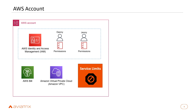Every account has service limits — basically quotas on the number of things you can do with a service, such as the number of EC2 instances in a VPC, the number of VPCs per region, or the number of peering connections from one VPC. Some limits are soft limits that AWS can raise upon request; others are hard limits that cannot be raised and must be architectured around.